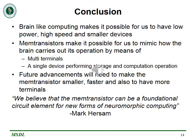In conclusion, brain-like computing makes it possible for us to have low power, high-speed, and smaller devices. The memtransistor makes it possible to mimic how the brain carries out its operations by means of multi-terminals — just as neurons have multi-terminals, having transistors with multi-terminals is a key step, and the memtransistor achieves that purpose. We also need a single device that performs both storage and computation operations, just like neurons. Future advancements will need to make the memtransistor smaller, faster, and to have more terminals. As Mark Hersam, who spearheads the memtransistor fabrication project, said: "We believe that the memtransistor can be a foundational circuit element for new forms of neuromorphic computing."